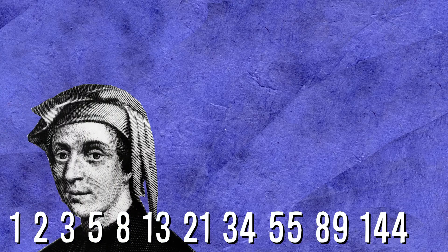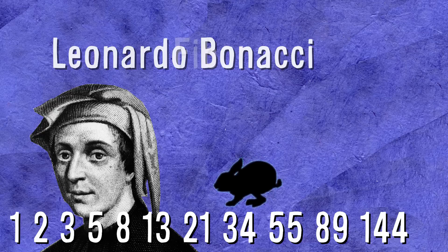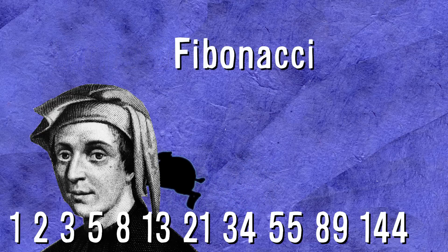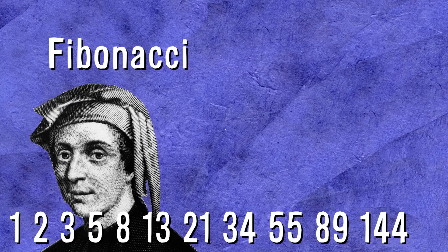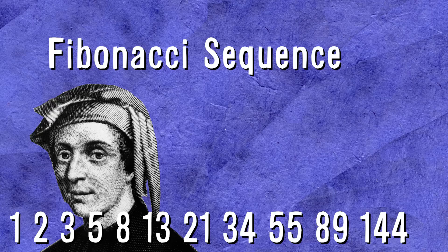Now maybe this number sequence looks familiar. What Leonardo Bonacci, better known by his nickname Fibonacci, had uncovered with the help of his rabbits is the so-called Fibonacci sequence. You'll notice that each new term in the sequence is produced by adding together the two previous terms: 1 plus 2 equals 3, 2 plus 3 equals 5, 3 plus 5 equals 8, and so on, giving the famous sequence of Fibonacci numbers.